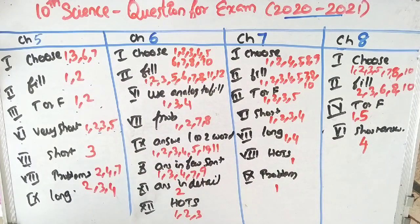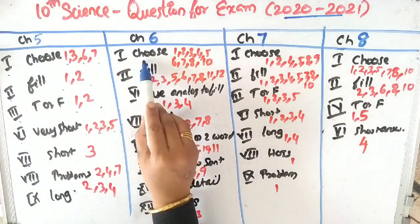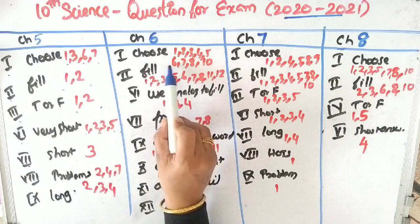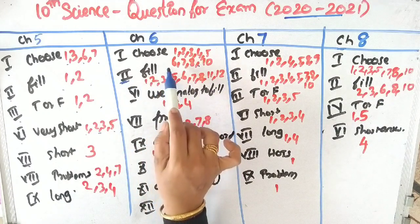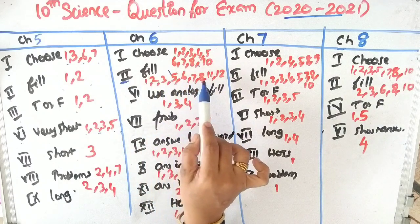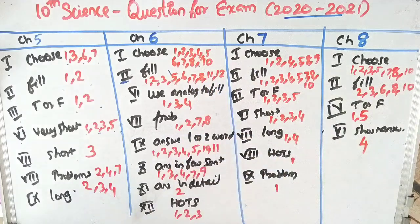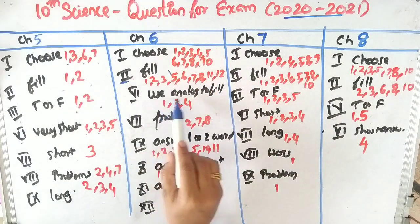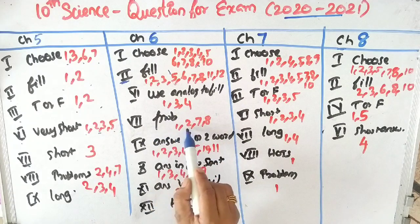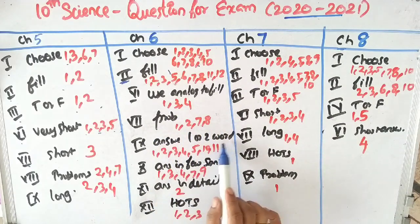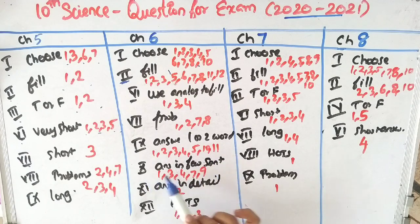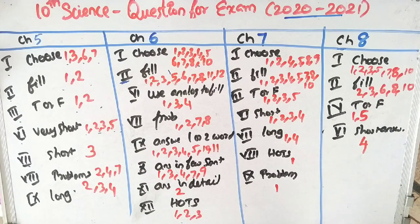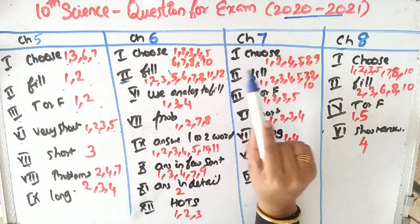In chapter 6, first Roman numeral: questions 1 and 10. Second Roman numeral — fill in the blanks: questions 1 and 12. There are also questions 4, 9, 10. Sixth Roman numeral: questions 1, 3, 4. Seventh Roman numeral — problem: questions 1, 2, 7, 8. Ninth Roman numeral — answer in 1 or 2 words: questions 1, 2, 3, 4, 5, 10, 11. Tenth Roman numeral — answer in 2 sentences. Eighth Roman numeral: questions 1, 2, 3, 5, 10. Seventh Roman numeral: question 2. Twelfth Roman numeral: question 2. Eighth Roman numeral: questions 1 and 12.